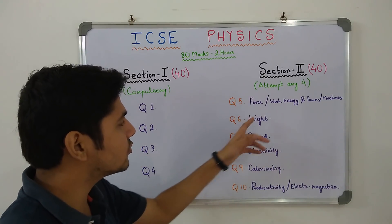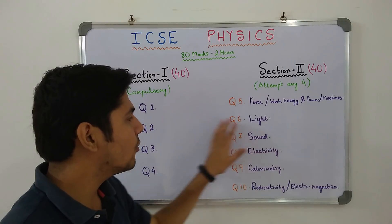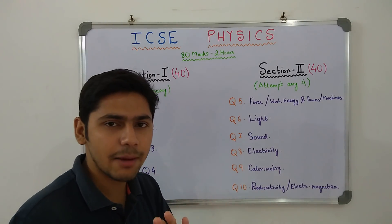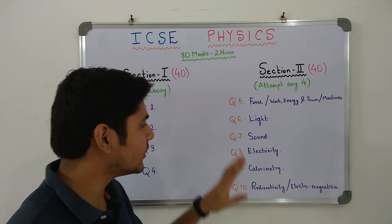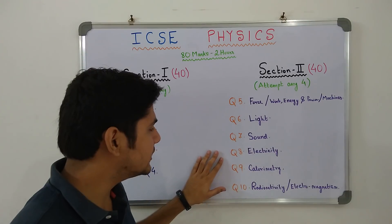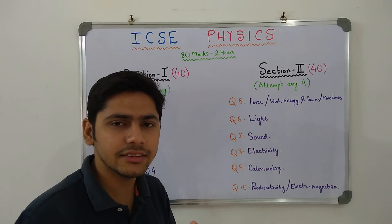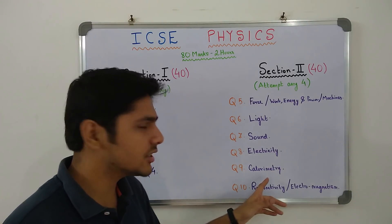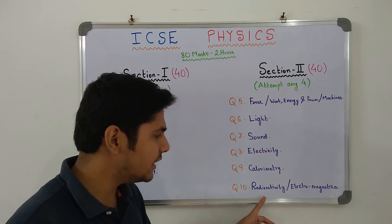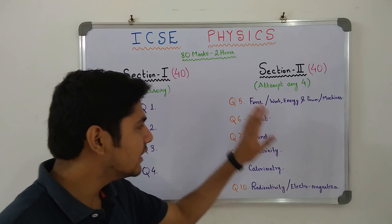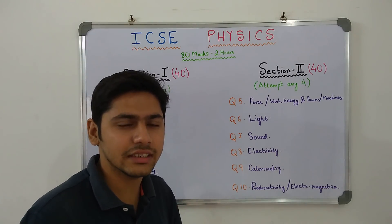Question 5 will have questions from Force, Work, Energy and Power and Machines. Question 6 will have questions from Light, all the 3 chapters - Refraction, Lens, Spectrum. Question 7 will have questions from Sound. Question 8 will have questions from Electricity from both the chapters, Current Electricity and Household Circuits. Question 9 will have questions from Calorimetry and Question 10 will have questions from Radio Activity and Electromagnetism. This is the chapter combination. You will have 6 questions and you have to attempt any 4 out of those 6 questions.